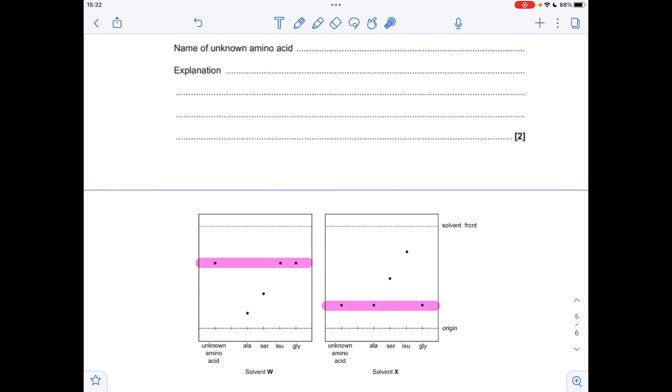For the very last question, we've got to decide which is the unknown amino acid from the two TLC plates in the two different solvents. So all I've done is put a line across the unknown. And you can see that that's matching the RF value in solvent W for leucine and glycine.